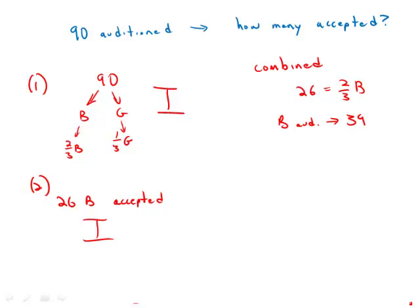Well, now, if the boys who auditioned are 39, that means the other people who auditioned are 90 minus 39, which is 51.